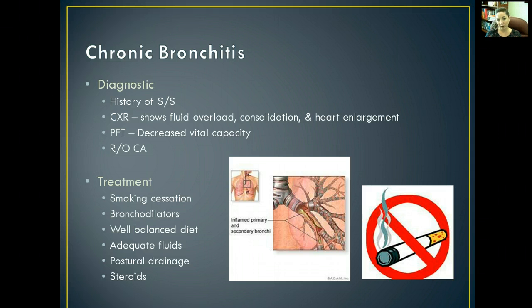To diagnose chronic bronchitis, we look at the history of signs and symptoms — specifically respiratory infections lasting more than three months for two consecutive years. A chest x-ray will show fluid accumulation, fluid overload within the lungs, consolidation within the alveoli, and heart enlargement. Pulmonary function tests will show a decreased vital capacity. We also want to rule out cancer and tuberculosis at these stages.